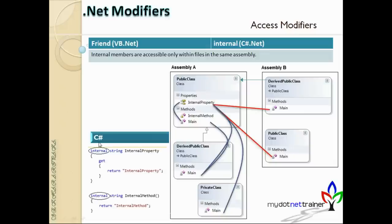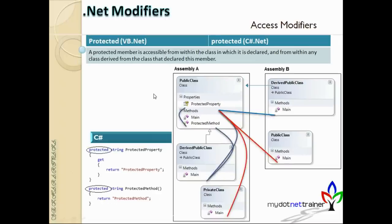The 'internal' keyword is used to declare the access modifier in C#, and the equivalent keyword in VB.NET is 'friend'. Among all the keywords, only internal is different in VB.NET - it's termed as 'friend'. Otherwise the rest are all the same. That's the key thing to remember.